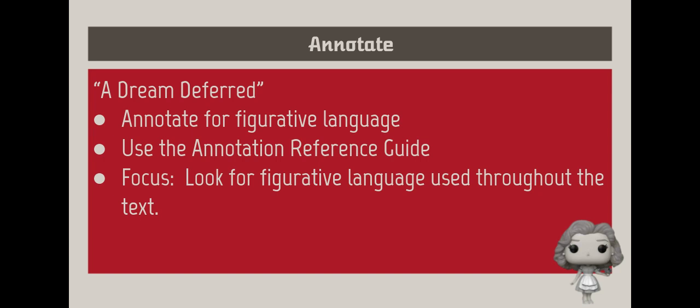Is there a symbolic level of meaning? If so, how has the author developed symbolism? Is irony present in the language, events, or characterization of the work? If so, what are the effects of its ironic elements? How has the author used other literary language devices such as rhyme, rhythm, alliteration, onomatopoeia, etc. in the work?